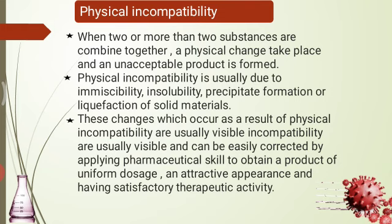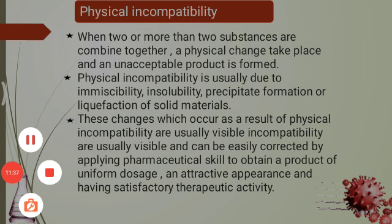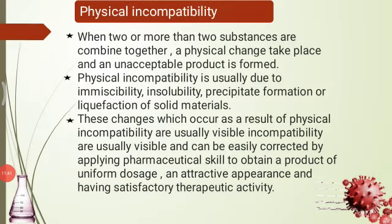Physical incompatibilities may be corrected by using one or more of the following methods: first, change the order of mixing of ingredients; second, emulsification; third, addition of a suspending agent; fourth, change in the form of ingredients; and fifth, addition or substitution of a therapeutically equivalent substance to help in compounding the prescription.